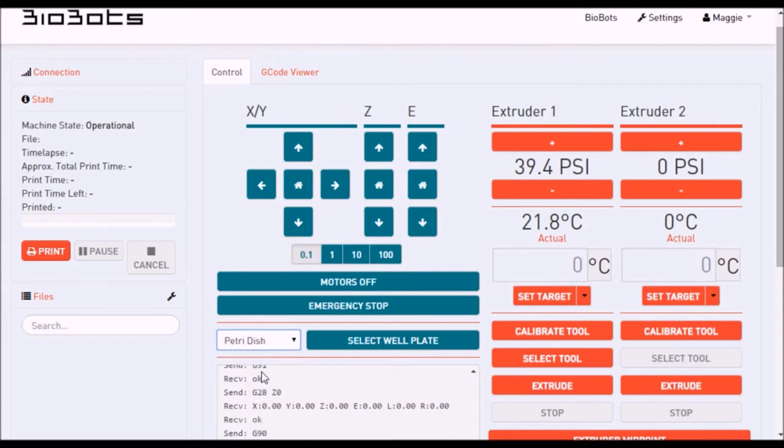Set your well plate to Petri dish and click Select Well Plate. Calibrate the extruder so the needle is just above the Petri dish and centered in the X on the calibration sheet. This part of the calibration process can sometimes take a few tries to get the hang of, so don't be discouraged if you don't get a perfect calibration on your first try.